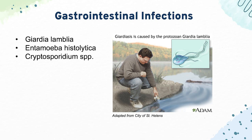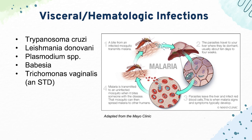For visceral and hematologic infections, we start with Trypanosoma cruzi, which causes Chagas disease — that causes dilated cardiomyopathy, megacolon, and megaesophagus. Then we have Leishmania donovani, which has two types: visceral, causing spiking fevers and hepatosplenomegaly; and cutaneous, causing skin ulcers. On microscopy, you can see macrophages containing amastigotes.